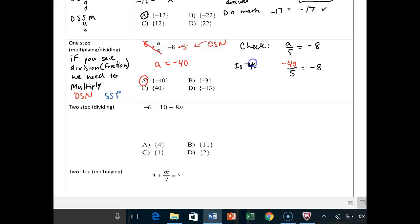And you can just write that down. Is negative 40 divided by 5 equal to negative 8? And the answer is, yes, it is, because we get negative 8 equals negative 8. Checked, all right?